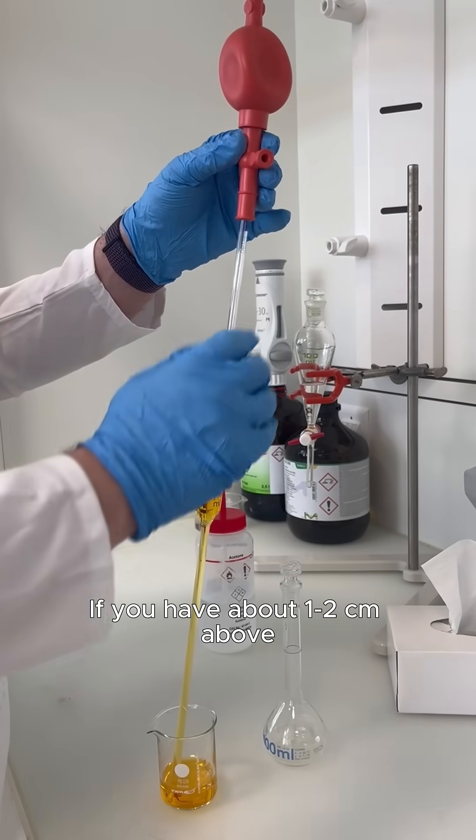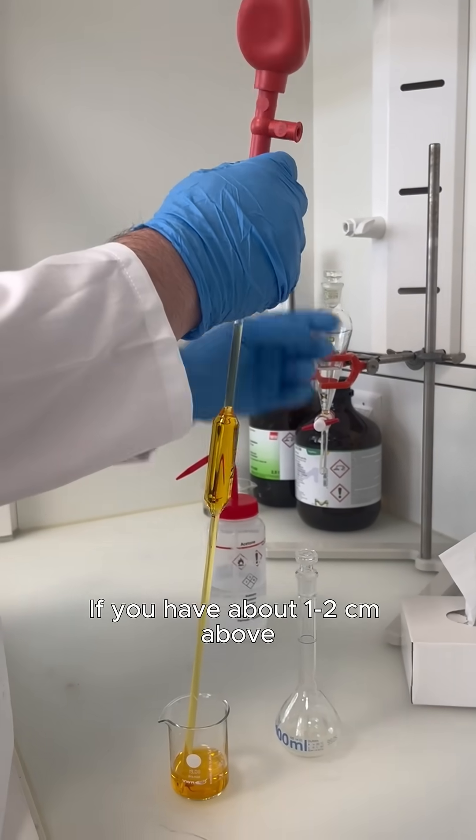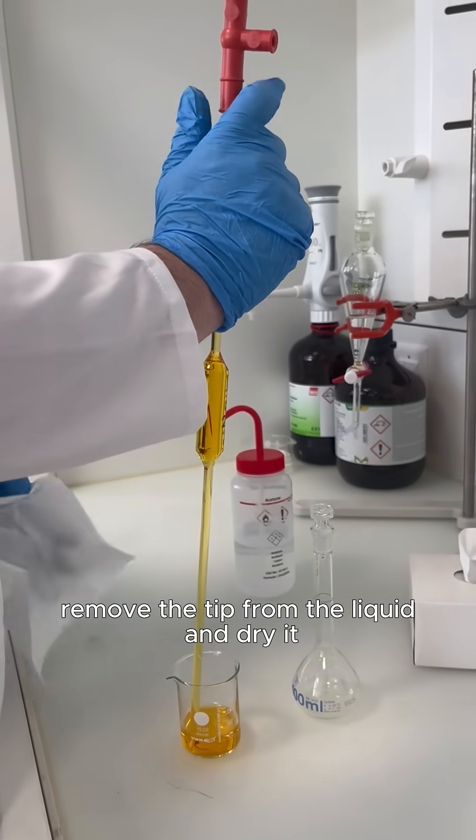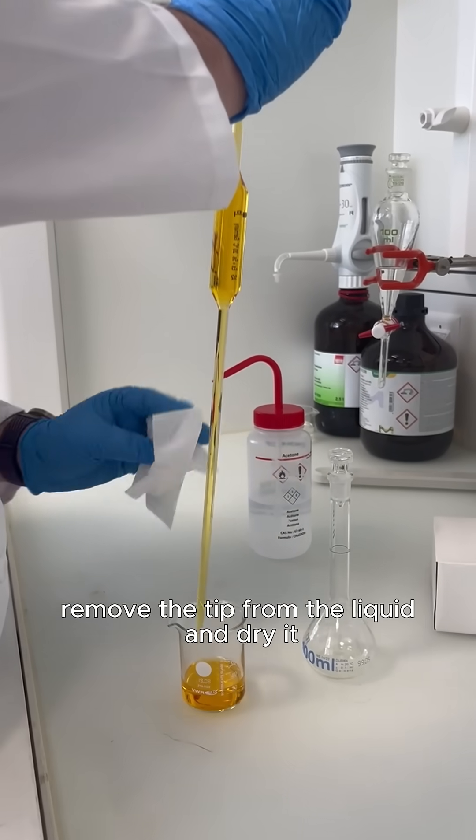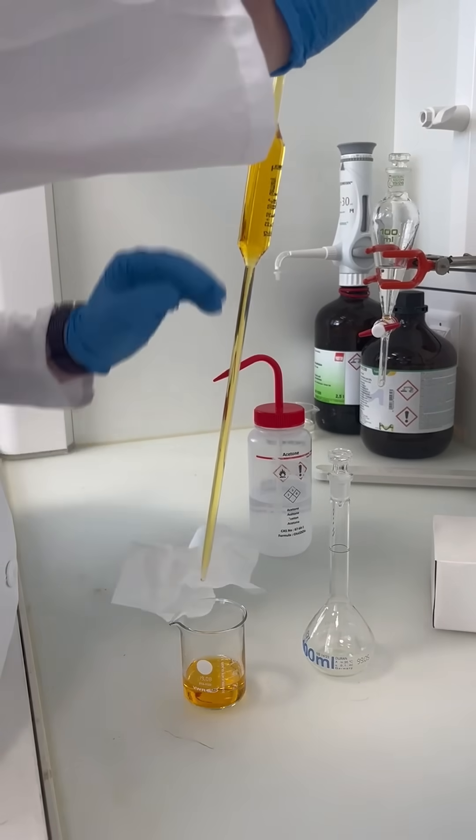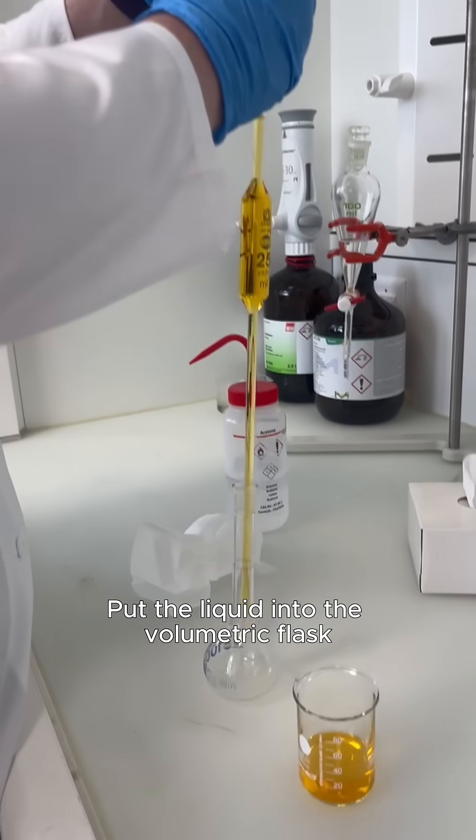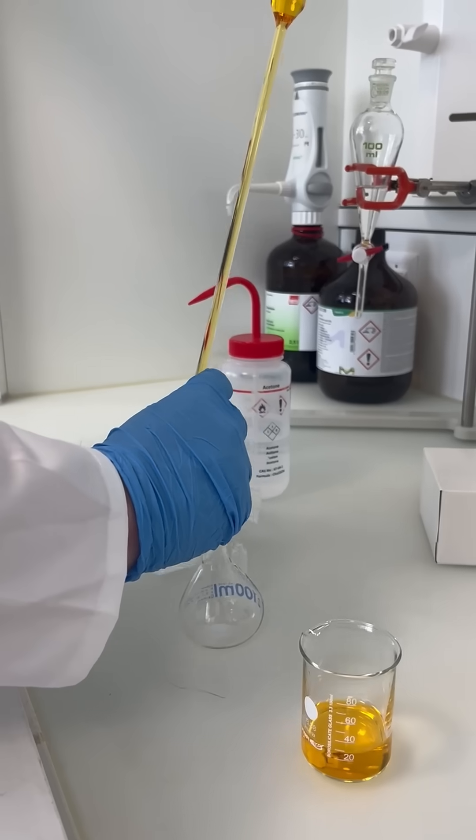If you have about 1-2 cm above, remove the tip from the liquid and dry it. Put the liquid into the volumetric flask.